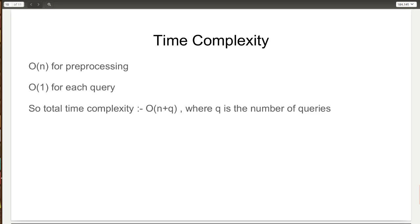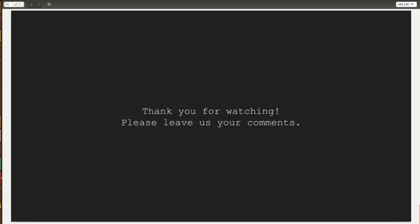Now let's look at the time complexity. The only two things we did in the code were run the modified DFS and then process the queries. DFS takes O(n) time and each query takes O(1) time as we are just checking 2 conditions. So the total time complexity is O(n + q), where q is the number of queries. Thank you for watching.